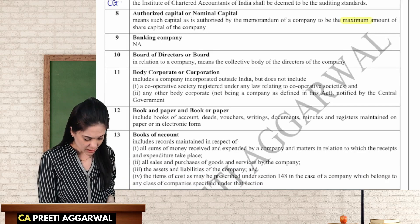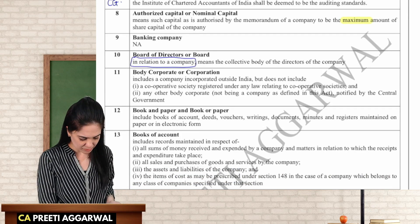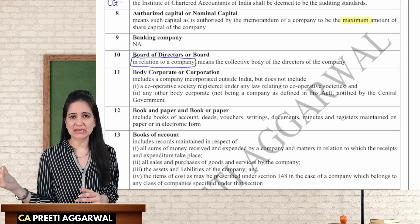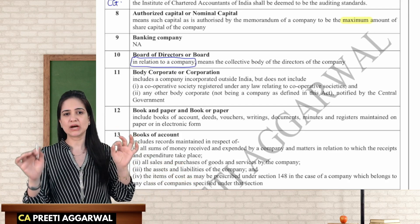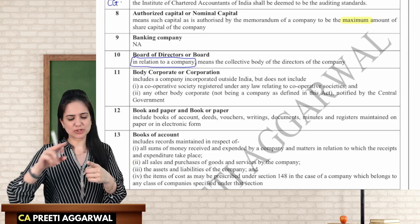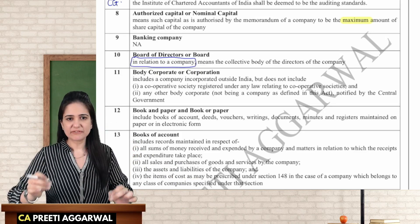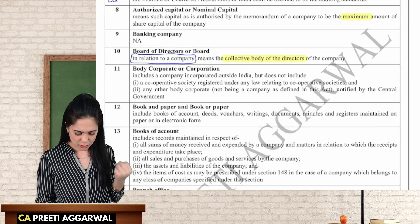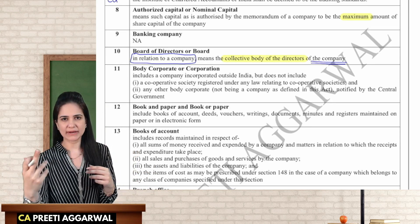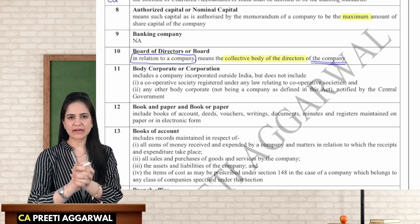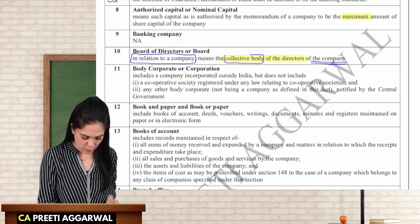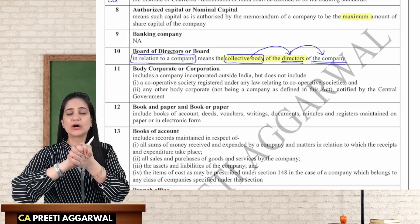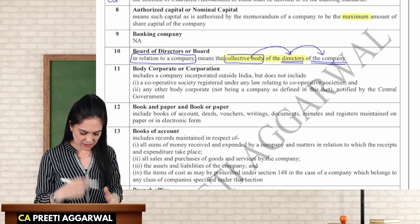Board of directors or board: in relation to a company, board means the collective body of the directors of the company. Not just one director — it is a collective body. How will you remember this? It is a collective body of directors of the company. Those are the three keywords. The word corporation is derived from the Latin word 'corpus' which means body.